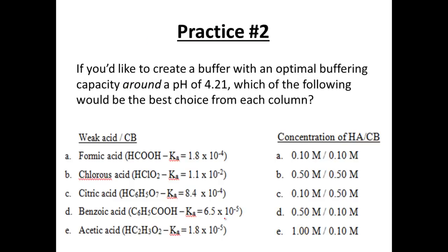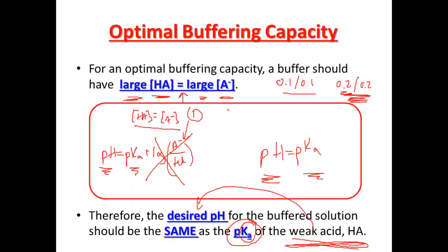Here's a practice problem to take us through this. Let's say I want to create a buffer with an optimal buffering capacity around pH 4.21. We want to know which acid and its conjugate base would be the best choice, and which concentration combination would be best. So if you want a pH around 4.21, we need to investigate the pKa, and a pKa near that would also be 4.21.